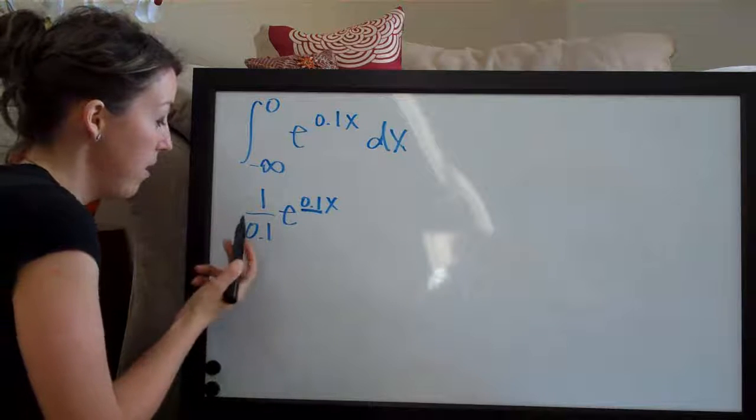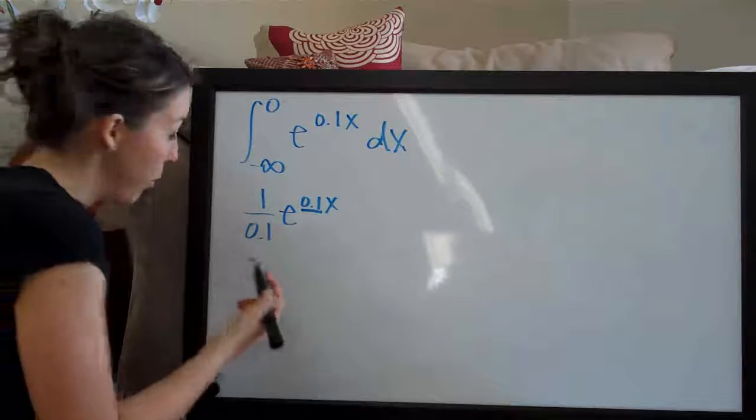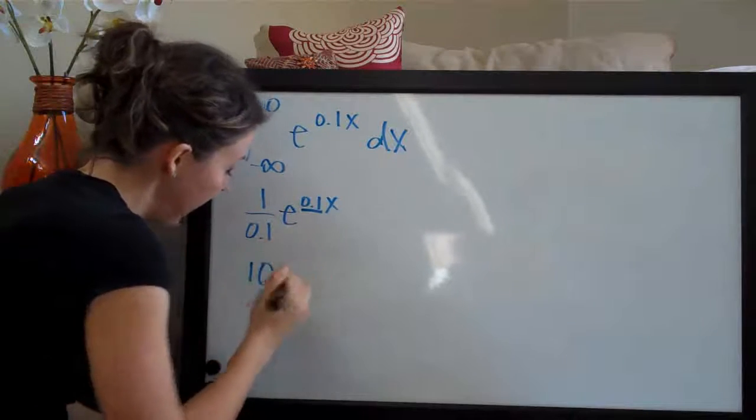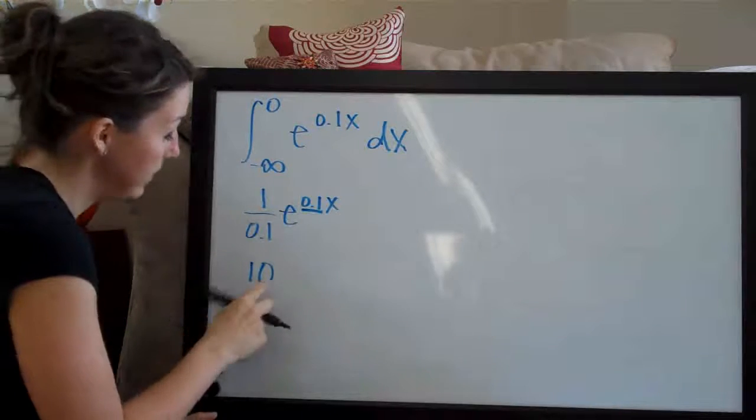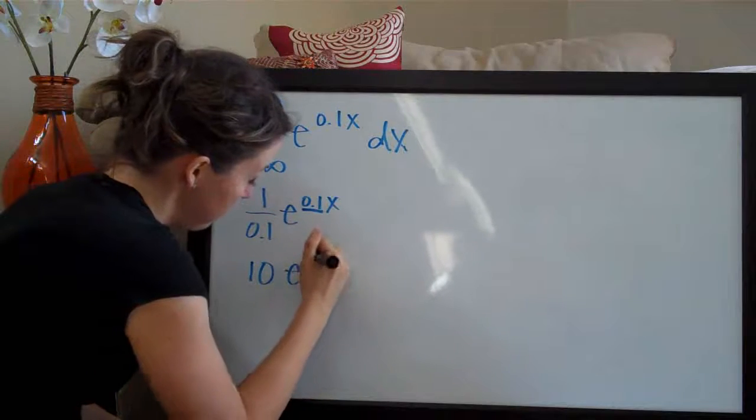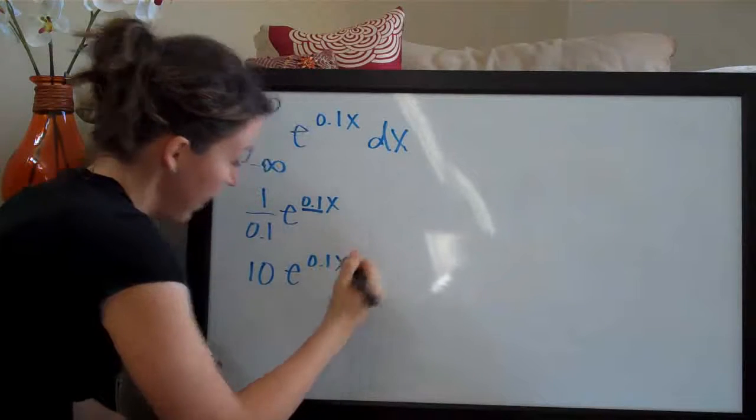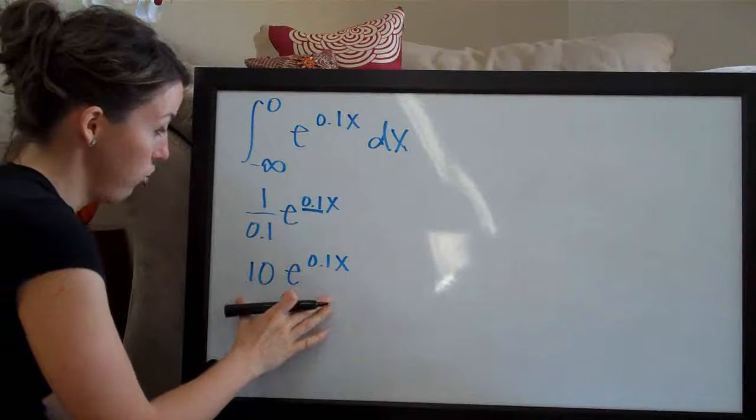So I'm just going to go ahead and simplify. 1 divided by 0.1 is, of course, 10. And you can do that in your calculator if you want. So 10e to the 0.1x. So that's your integral.